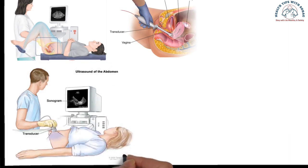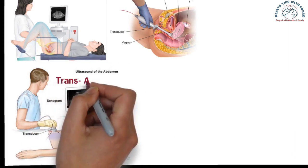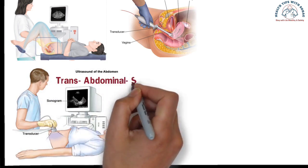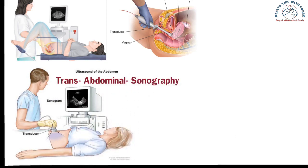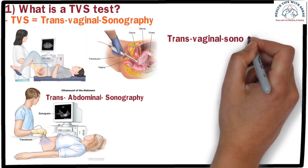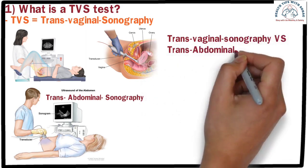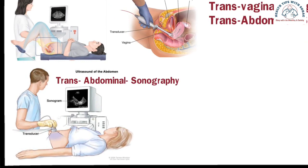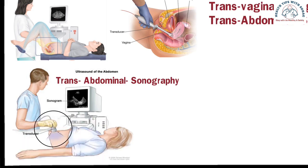The ultrasound probe used for scanning through the abdomen is known as trans-abdominal sonography. Now I will discuss the difference between trans-abdominal ultrasound and trans-vaginal ultrasound. Ultrasound is basically a type of sound wave that creates images of various parts of the abdomen. Through these images, the doctor can determine whether the organs are normal or abnormal. Trans-abdominal sonography examines the organs inside the abdomen by placing an ultrasound probe on the upper part of the abdomen.